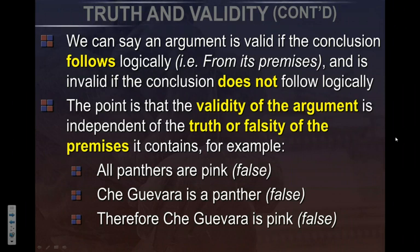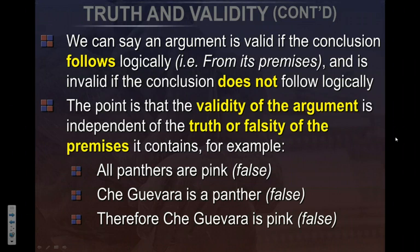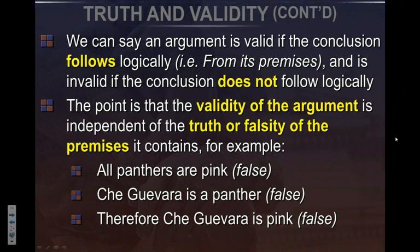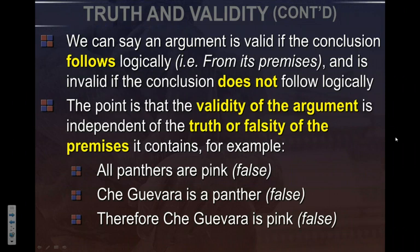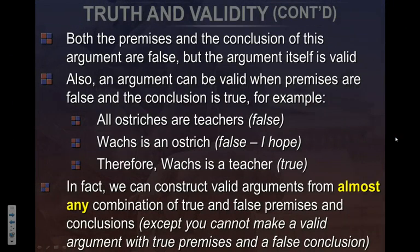An argument is valid if the conclusion follows logically; if it does not, it's invalid — and this is independent from truth. Here's an example: 'All panthers are pink' — that's false. 'Che Guevara is a panther' — that's also false. 'Therefore, Che Guevara is pink' — also false. But is that third statement valid based on the premises? It is. Based on those two premises, it's still a valid conclusion. It's false, but it's a valid conclusion. So just because something is valid doesn't mean it's true — that's the difference.